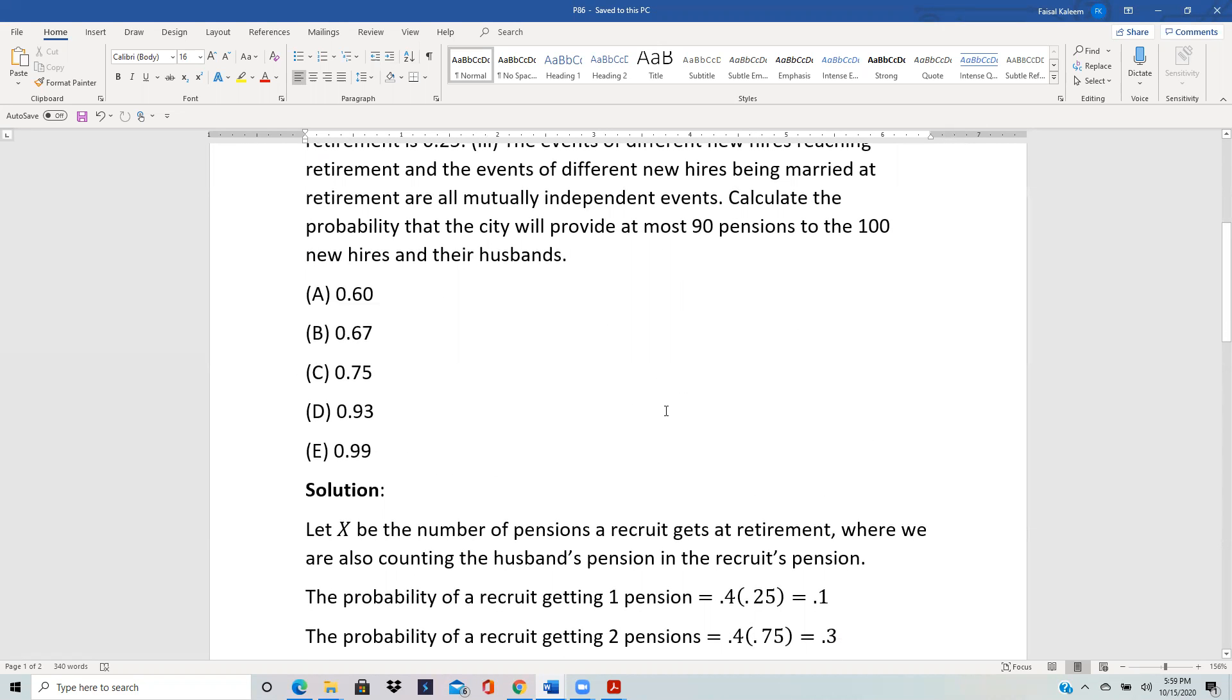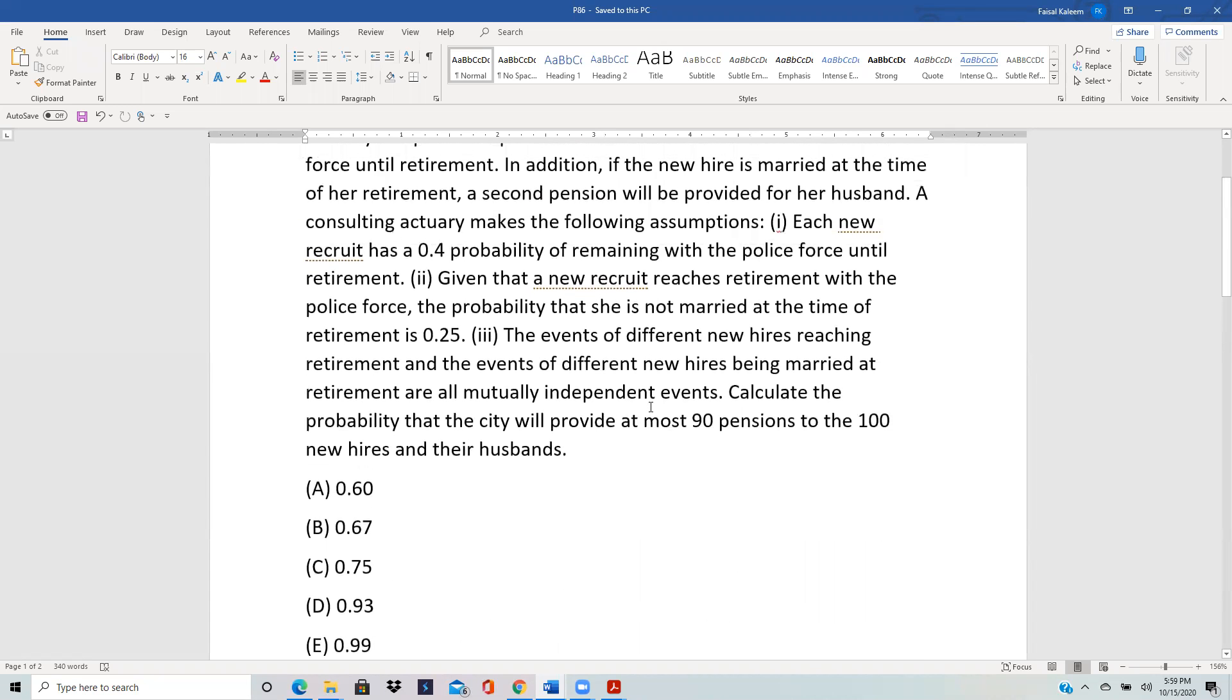Here we can let X be the number of pensions a recruit gets at her retirement, where we are also counting the husband's pension in the recruit's pension because the husband is getting it just because of the recruit. So if the husband also gets it, then we will say that the recruit is actually getting two pensions. We're not dealing with husbands separately here.